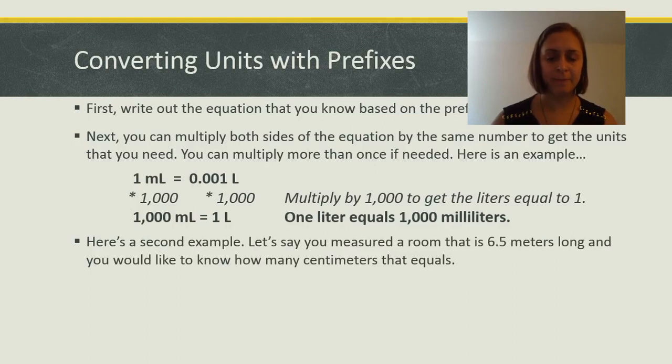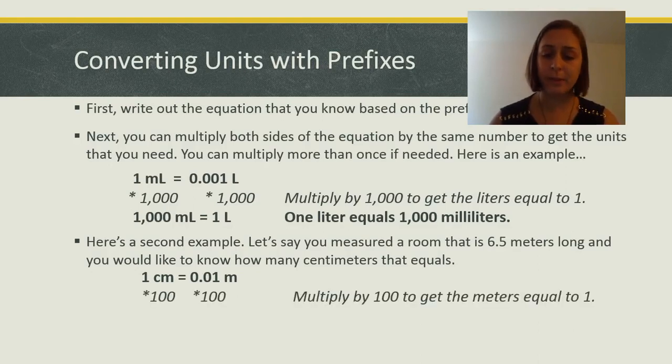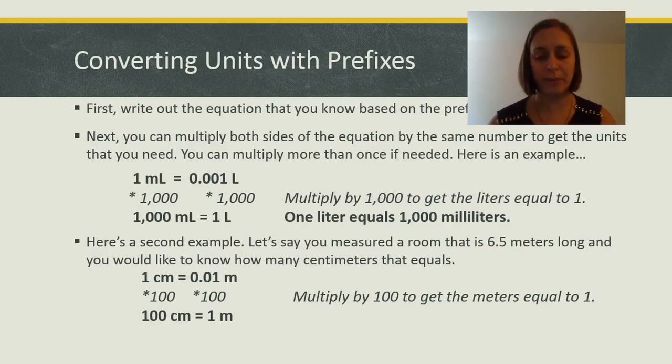Here's a second example. Let's say you measured a room that is six point five meters long, and you would like to know how many centimeters that equals. One centimeter equals one hundredth of a meter. We're going to multiply both sides by one hundred. On the left, one hundred centimeters. On the right, one hundredth times one hundred equals one meter.